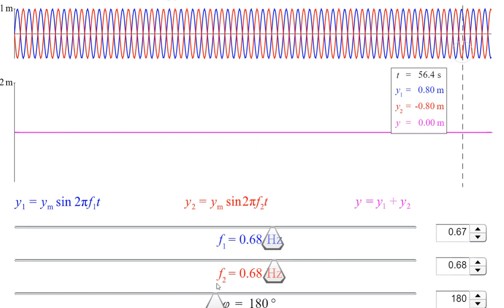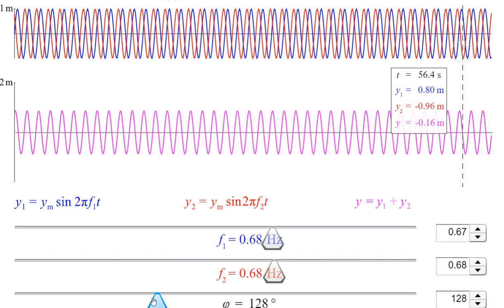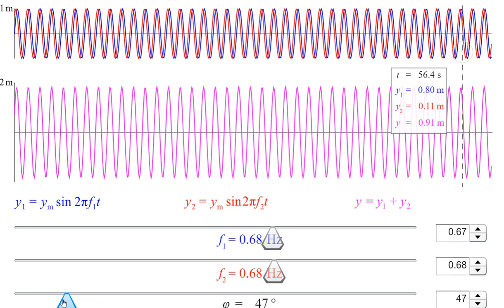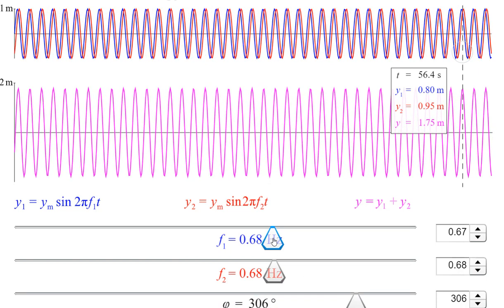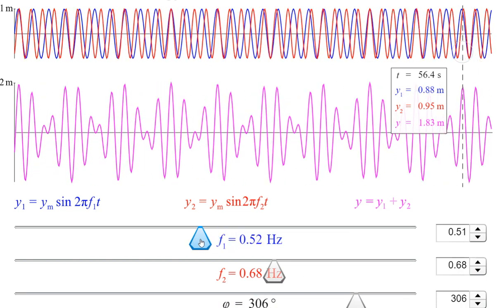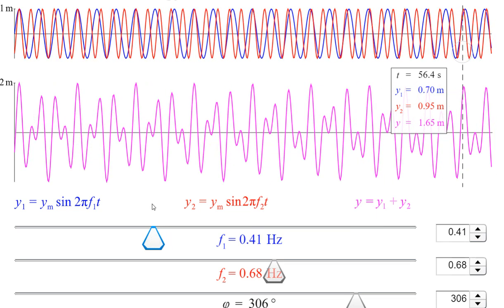On other phase differences, we have this type of output. By varying the individual frequencies, these are the different results. I am varying the frequencies and this is the superposition of these two waves.